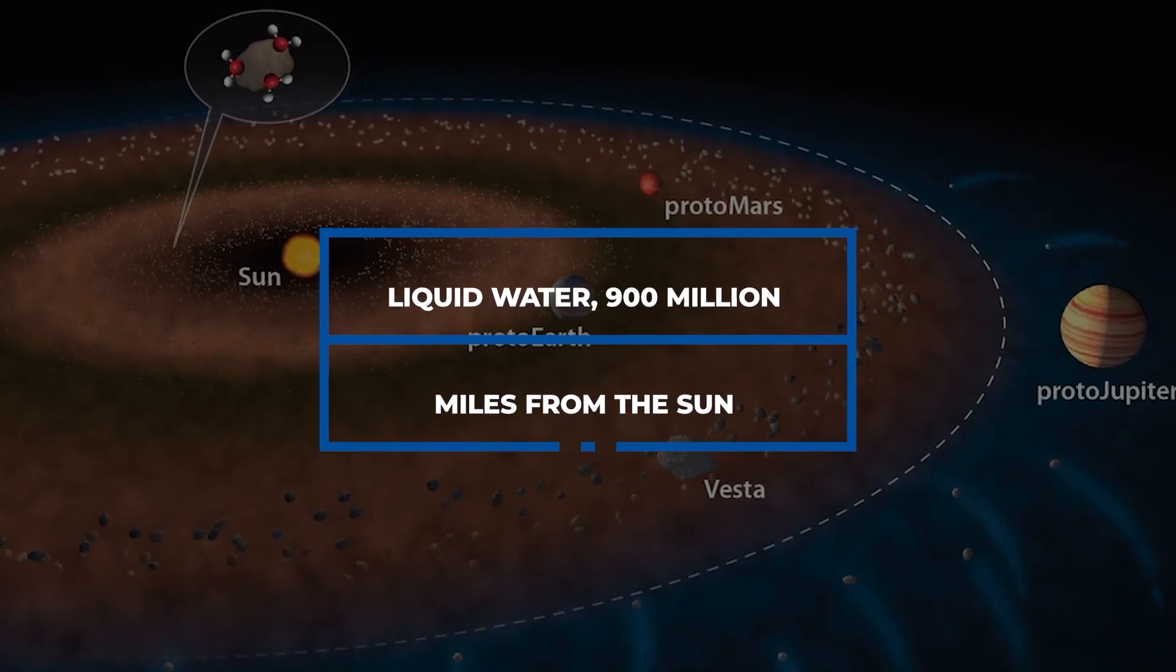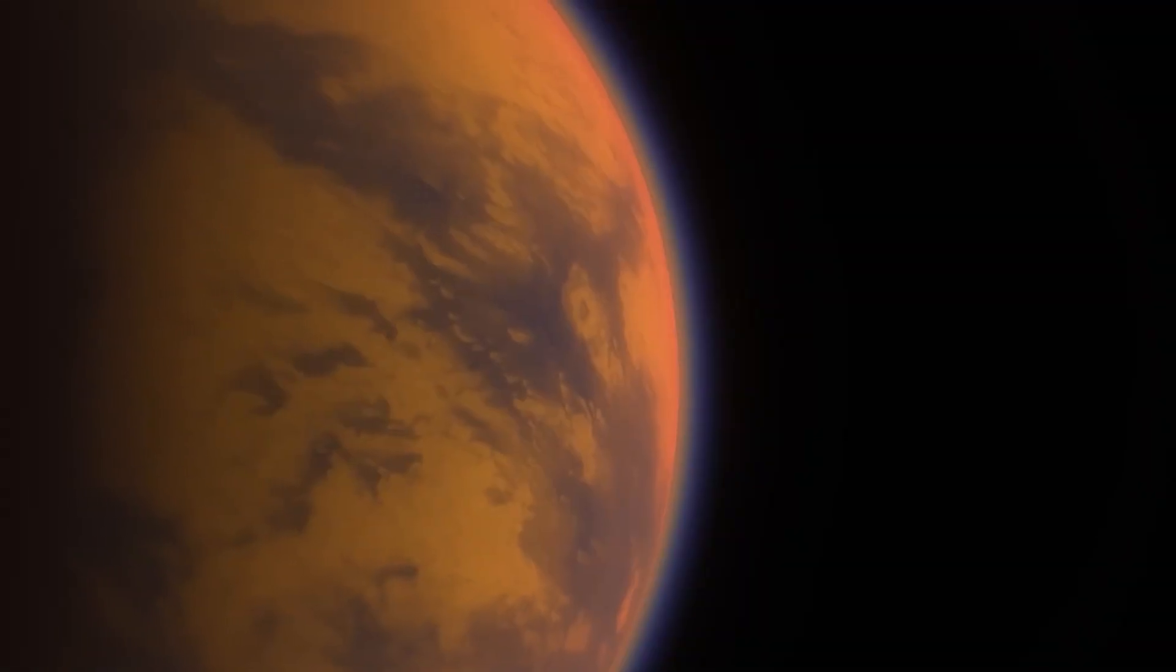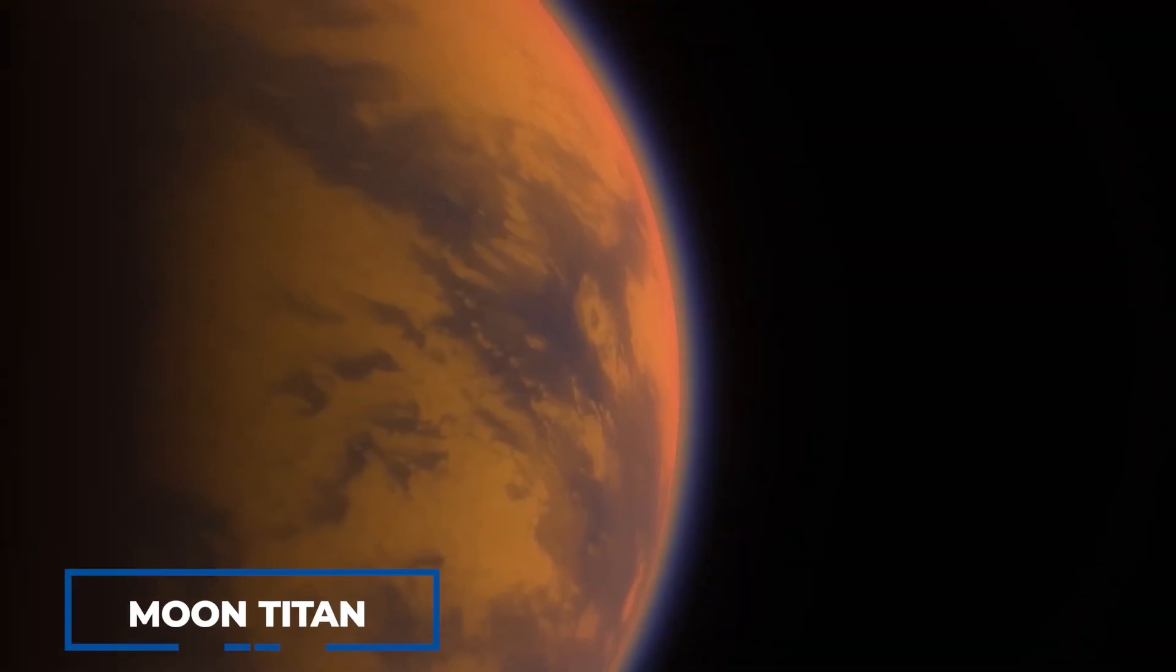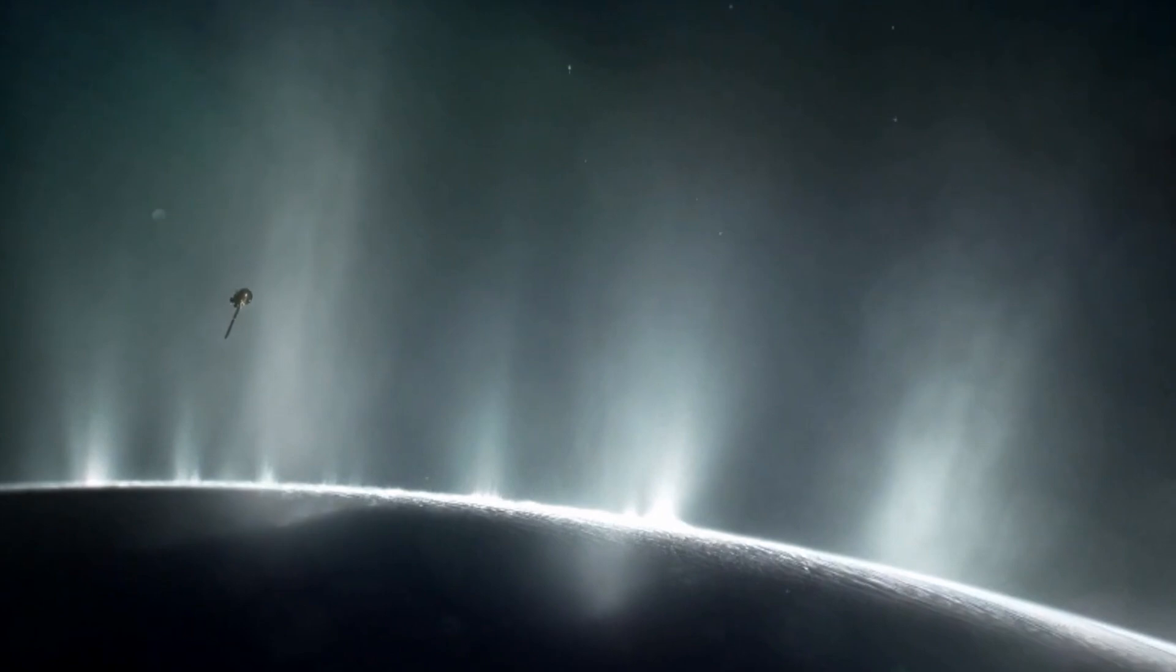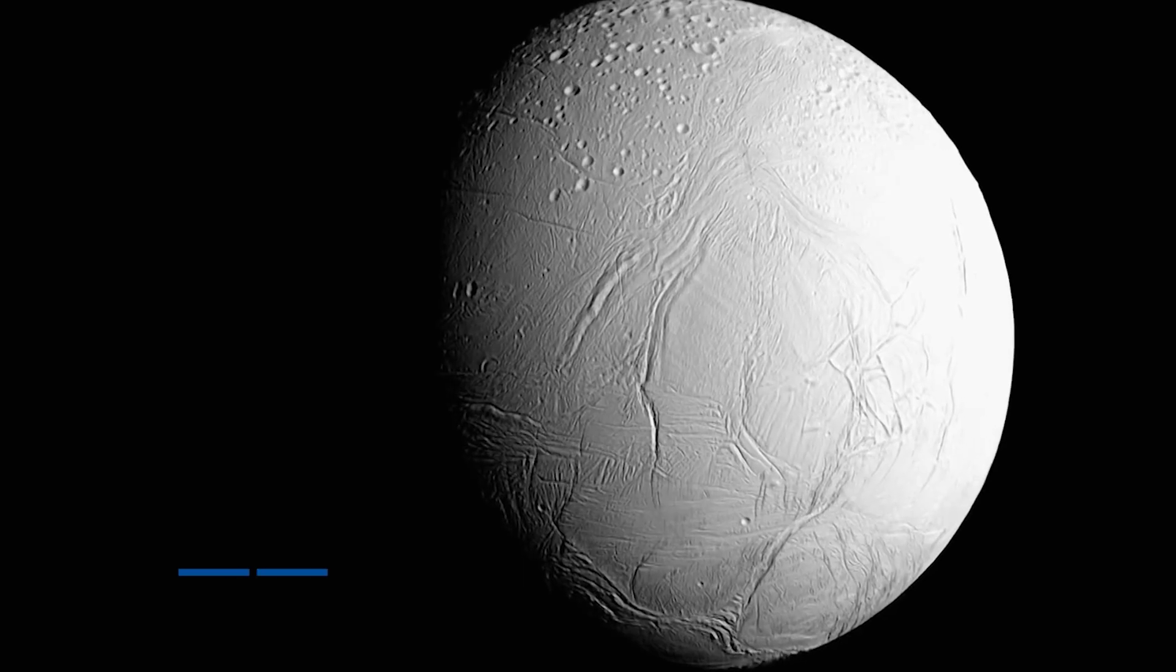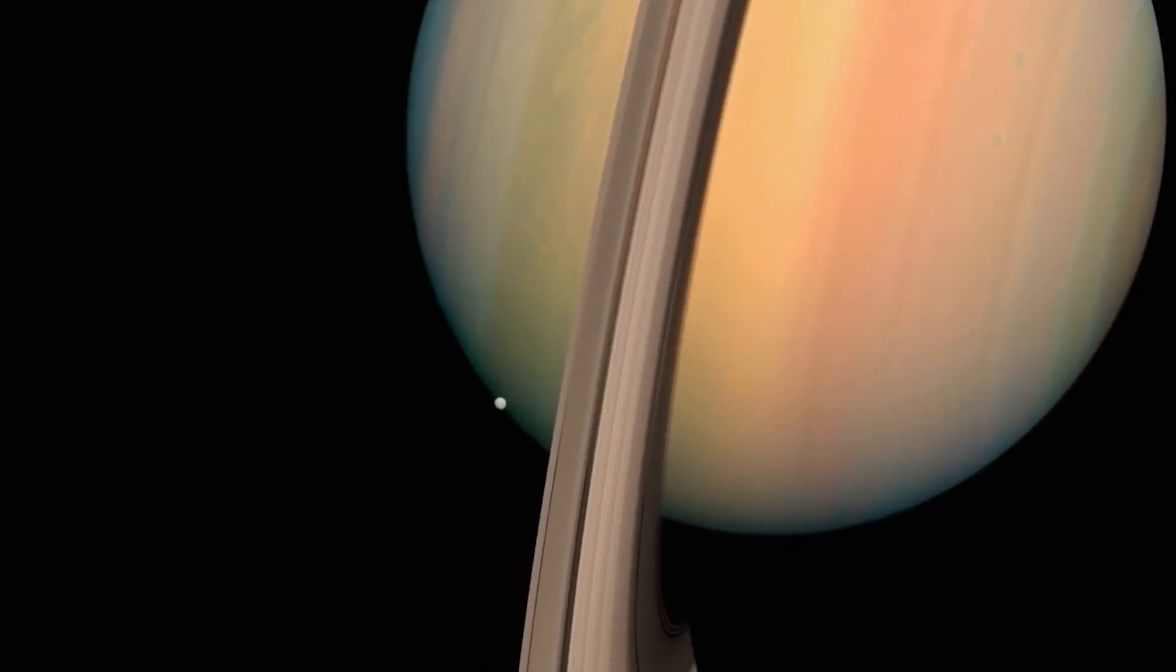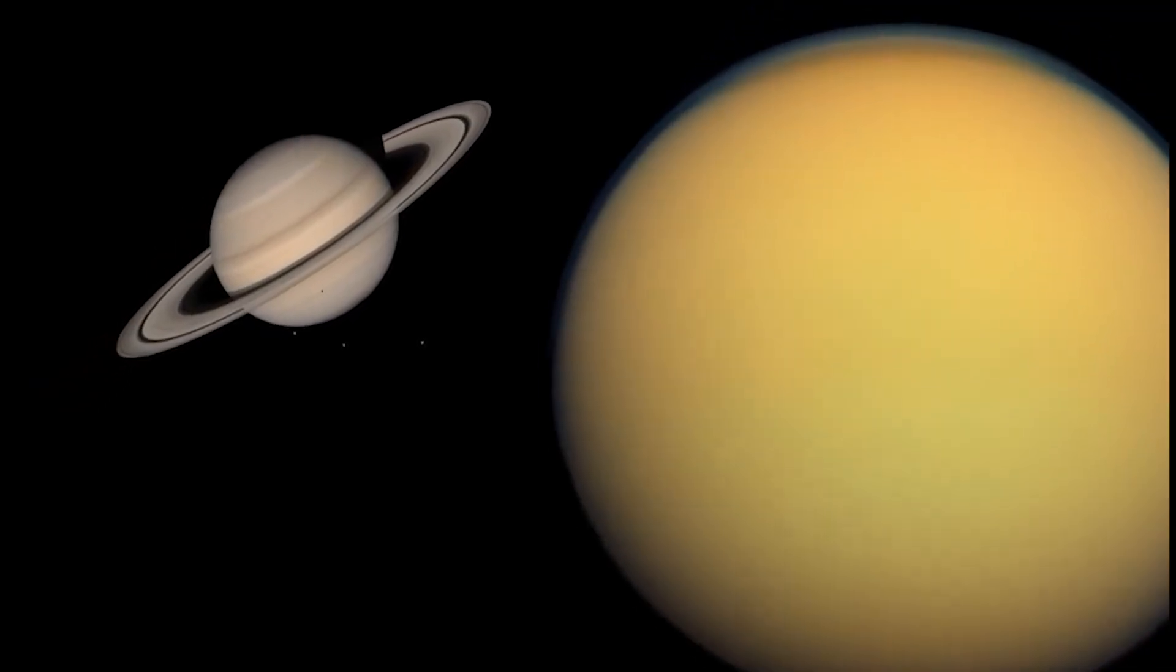Number one, liquid water 900 million miles from the sun. As captivating as Saturn's hazy orange moon Titan may be, it was actually one of the smaller satellites, Enceladus, that fascinated scientists. Prior to the Voyager mission, they only knew that Enceladus resided in Saturn's outermost E-ring and was relatively small. Little was known about this moon beyond that.